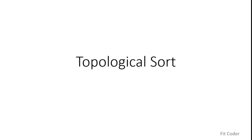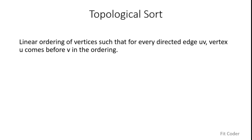Now let's proceed with topological sort. Topological sort is a linear ordering of vertices such that for every directed edge u→v, vertex u comes before v in the ordering. So if we are given a graph and there is an edge from u to v, then in the topological sort of that graph, u will come before v.